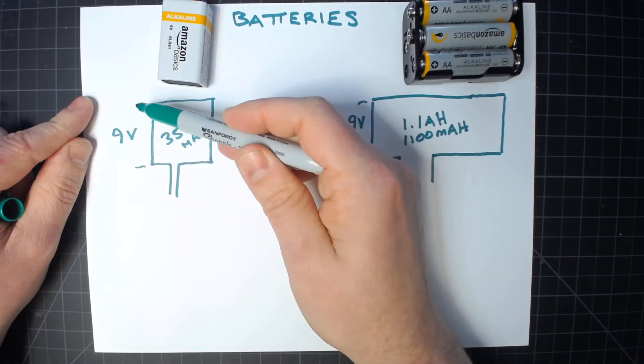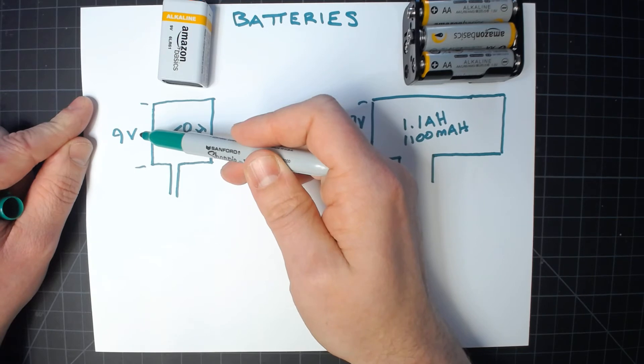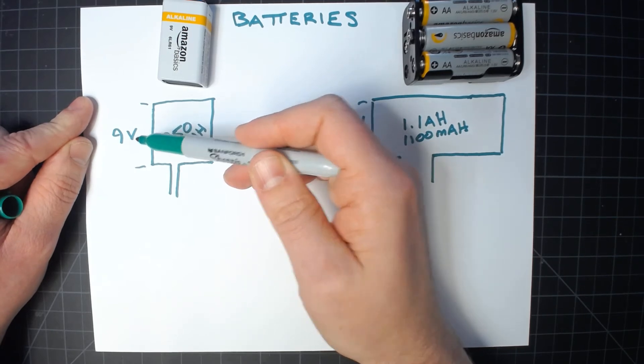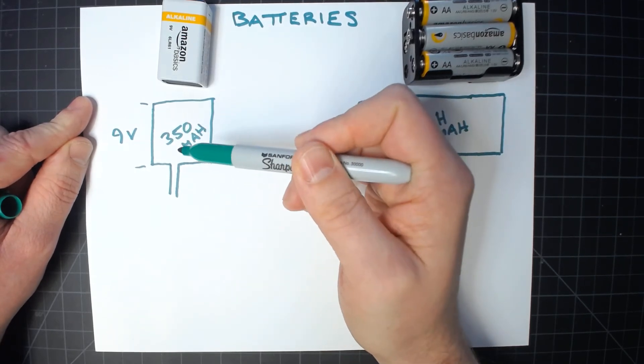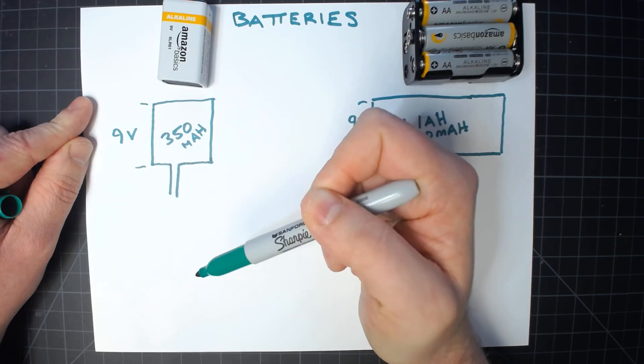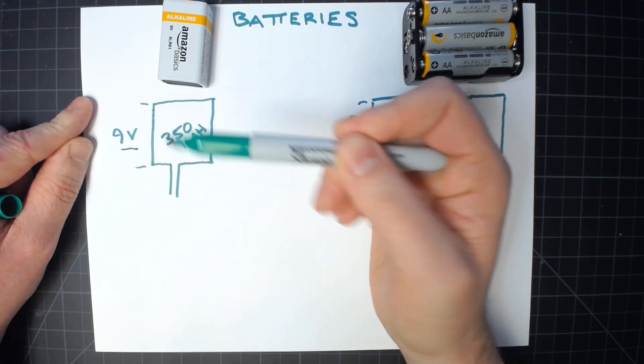When that collapses, the height of this changes, which means now the potential is not as great. So if I try to draw more current from this battery than it's able to deliver, this voltage here will actually drop.